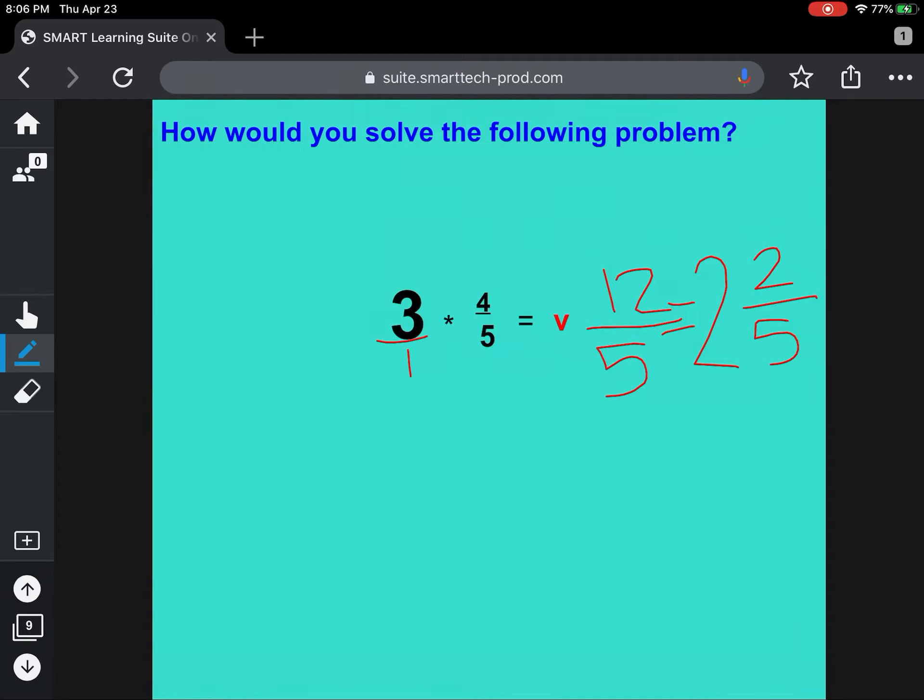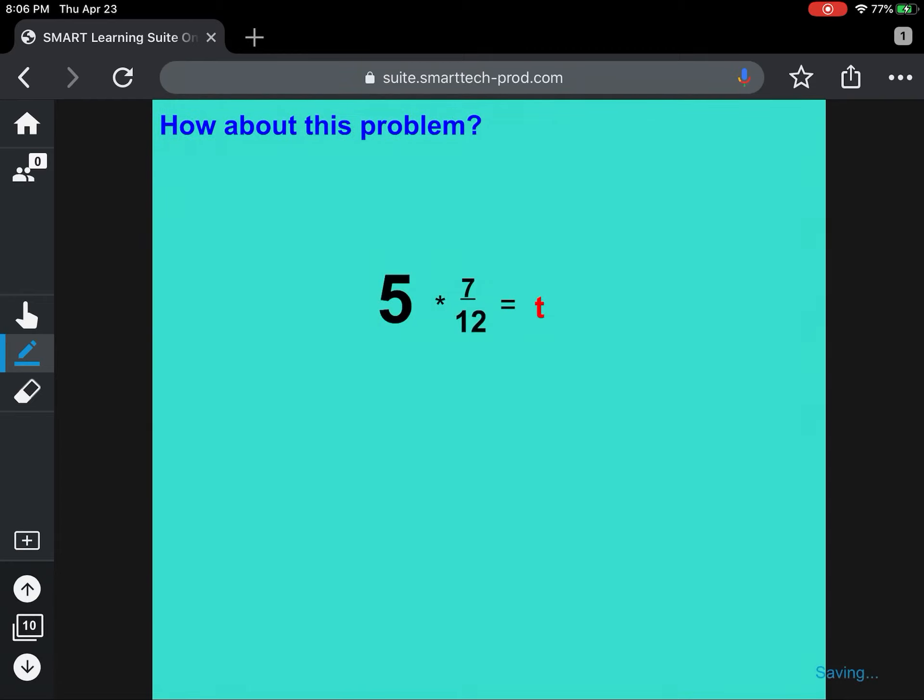The next one, you're going to do, and then we'll check. So on your paper, I would like you to solve 5 times 7/12. Pause your video now, solve it, make sure if your answer is an improper fraction, you change it to a mixed number, and then turn your video back on to check your work.